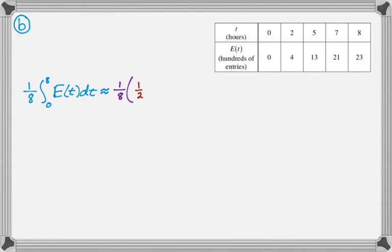So it's approximately one eighth. That's from the one eighth that's sitting out there. Now we're going to do our trapezoidal sum. So trapezoids, it's one half, and then from zero to two is two. And then sum of the bases, so four, and then plus another one half from two to five is three. And then sum of the bases is 17.